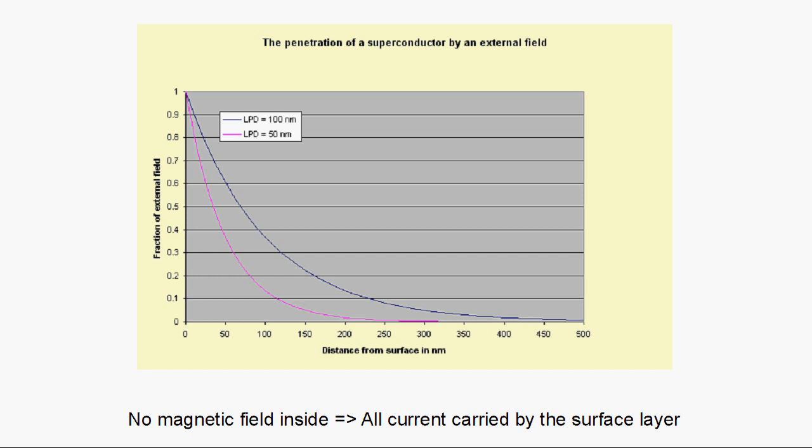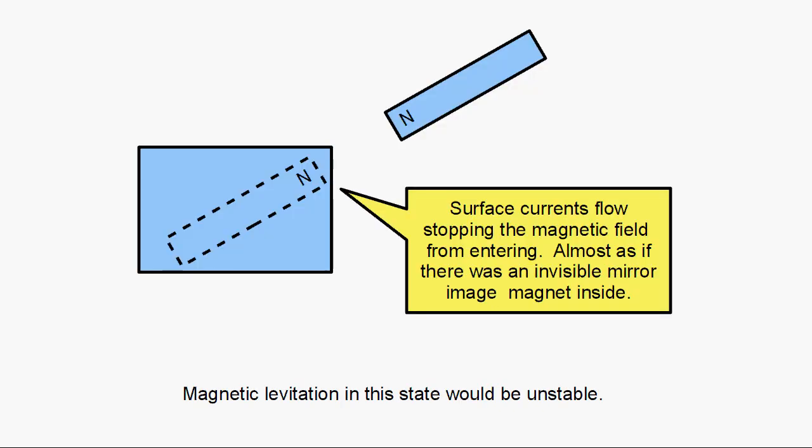I've drawn here a couple of graphs to show how the external field drops off as you move away from the surface for different values of the London Penetration depth, as you can see. Let's think about what happens when you bring a magnet up to a superconductor.